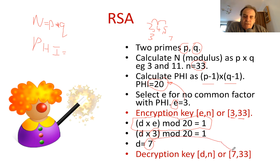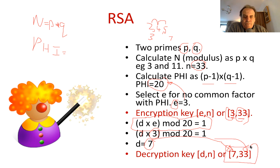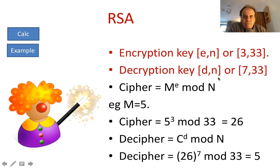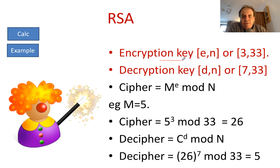So the decryption key we have is 7 and 33. We distribute the values of N and E publicly, but keep D secret. Those are our two keys: the encryption key (E=3, N=33) and the decryption key (D=7, N=33).